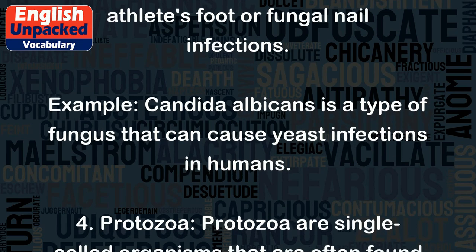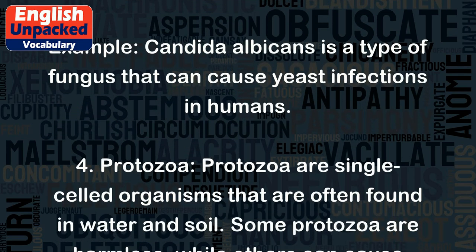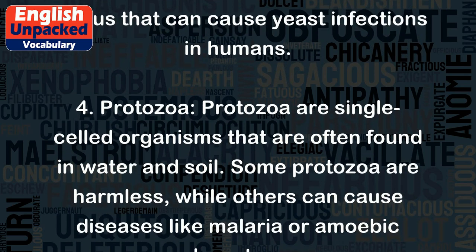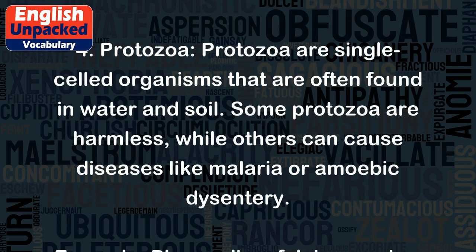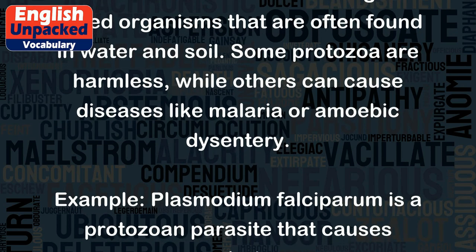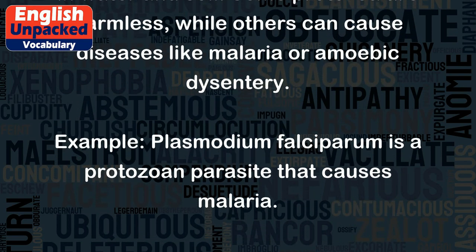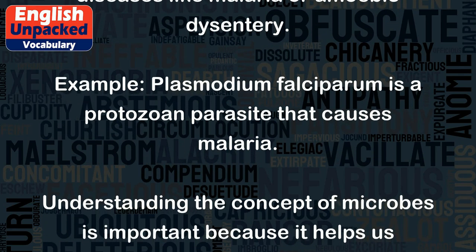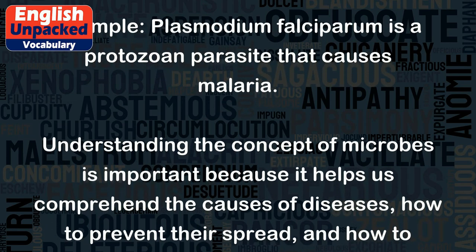Example: Candida albicans is a type of fungus that can cause yeast infections in humans. 4. Protozoa. Protozoa are single-celled organisms that are often found in water and soil. Some protozoa are harmless, while others can cause diseases like malaria or amoebic dysentery. Example: Plasmodium falciparum is a protozoan parasite that causes malaria.